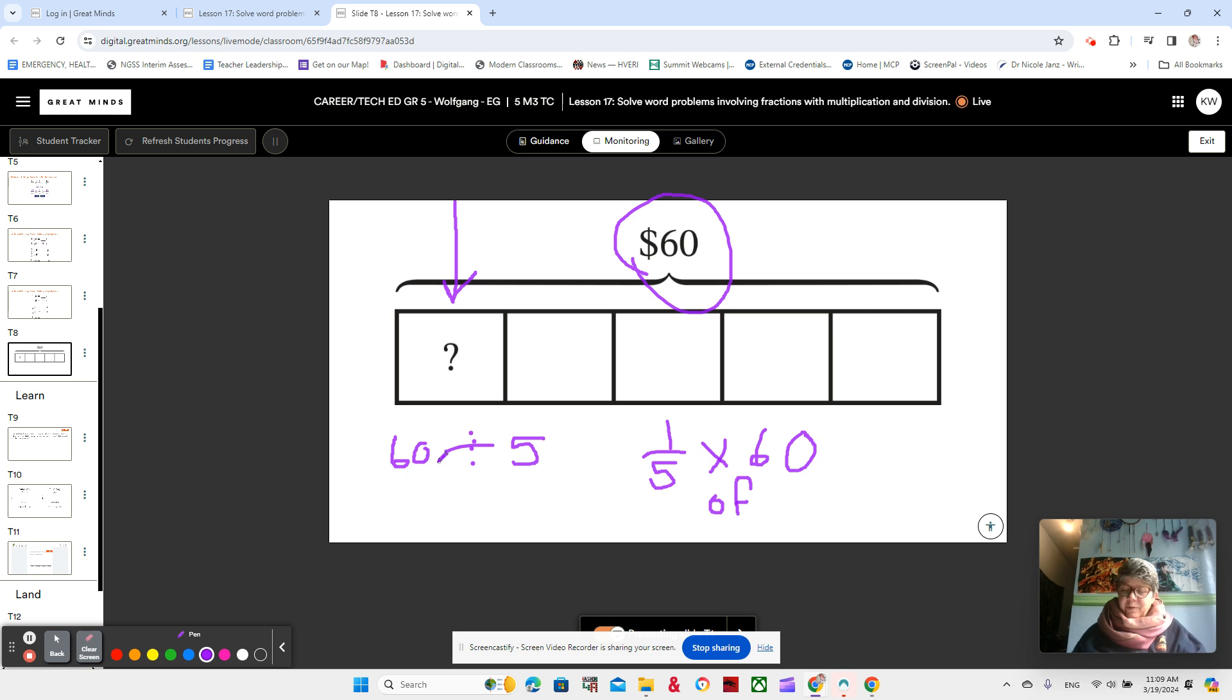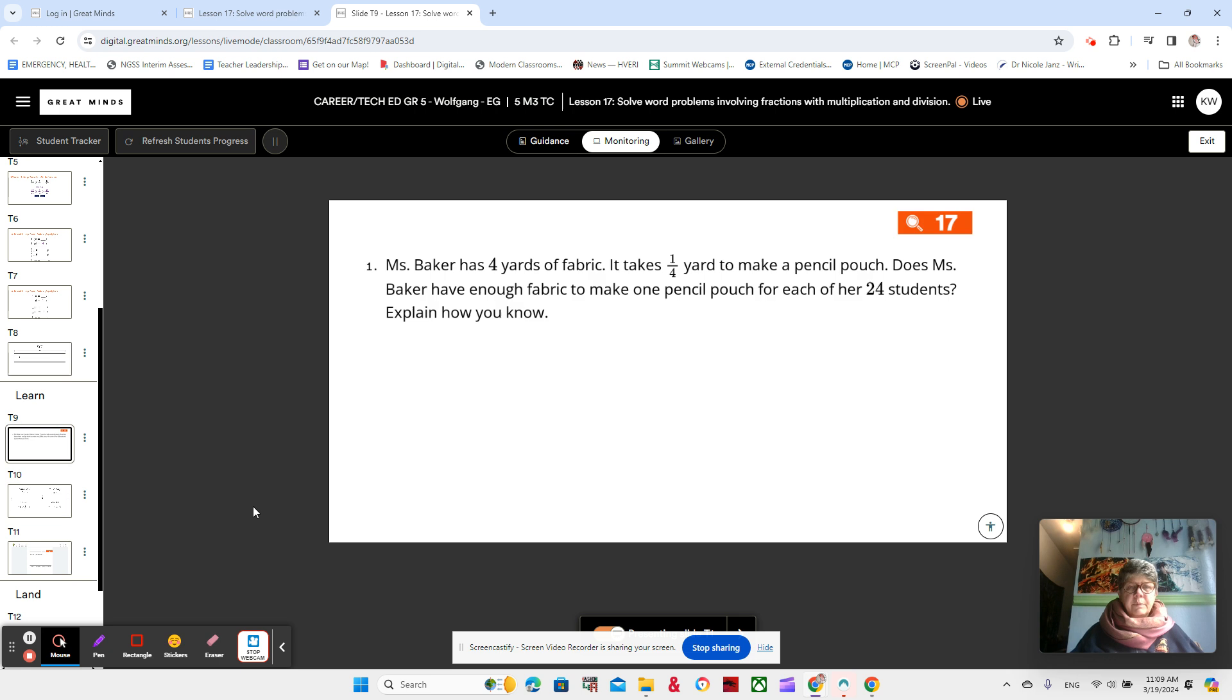And what is the answer to both of these problems? 60 divided by 5 and 1 fifth of 60. Well, you might remember that 5 times 12 is 60. And although each problem has a different context, we used different expressions to evaluate. Each problem is represented by this tape diagram and has the same answer. So today we're going to solve word problems involving fractions with multiplication and division.